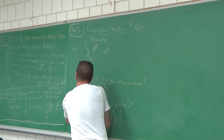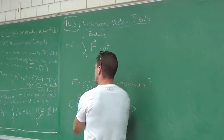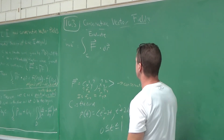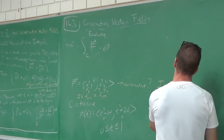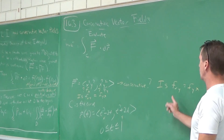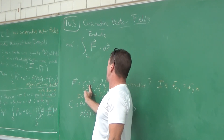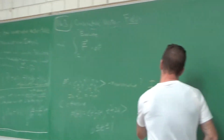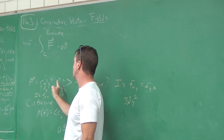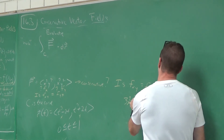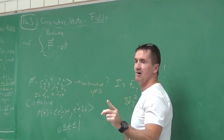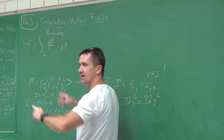Let's check: is fxy equal to fyx? The derivative of the x-component, x squared y cubed, with respect to y is 3x squared y squared. The derivative of the y-component, x cubed y squared, with respect to x is also 3x squared y squared. Are they equal? Yes! So this is a conservative vector field, and we can apply the fundamental theorem of line integrals.